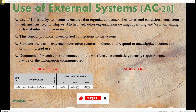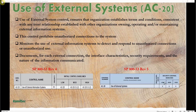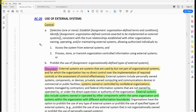In SP 800-53 Rev 5, AC-20 is also selected for all three baselines — the low, moderate, and high baseline. Now let's look at the control requirement explanation in Rev 5 for AC-20.